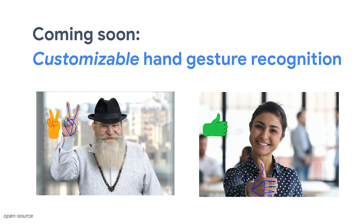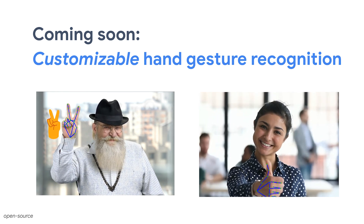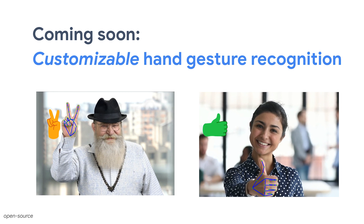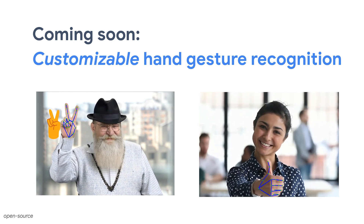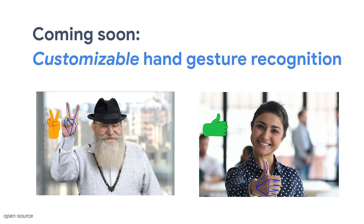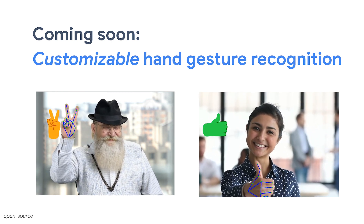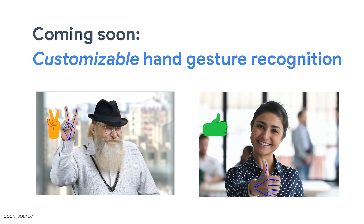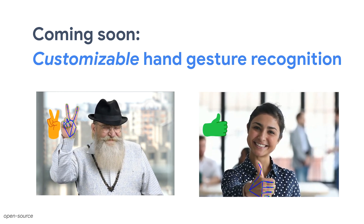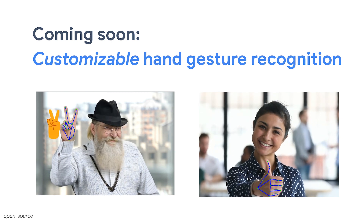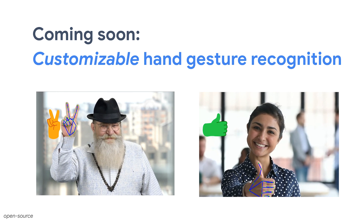For example, if you want to recognize gestures and convert them to emoji, you can start by taking photos of hand gestures corresponding to each type of emoji you want to detect. Then use ModelMaker to train a custom model to recognize those hand gestures, and use Task Library to deploy the custom model on your Android, iOS, Web, or Python apps.